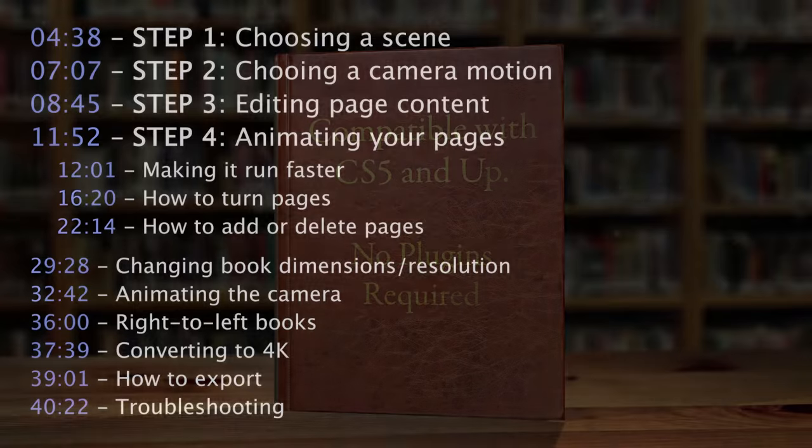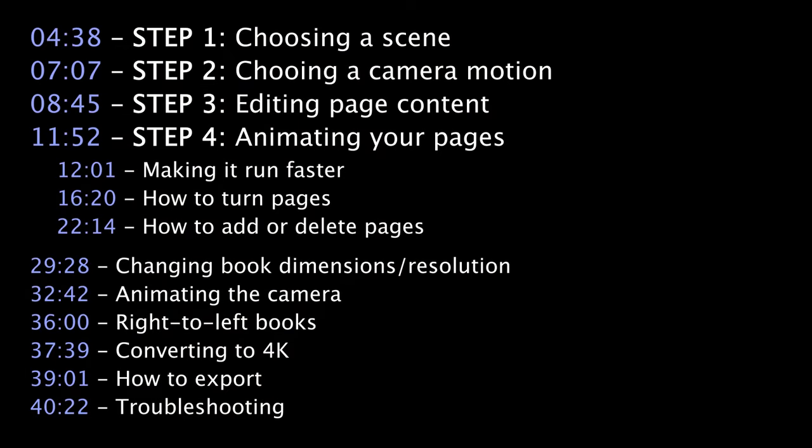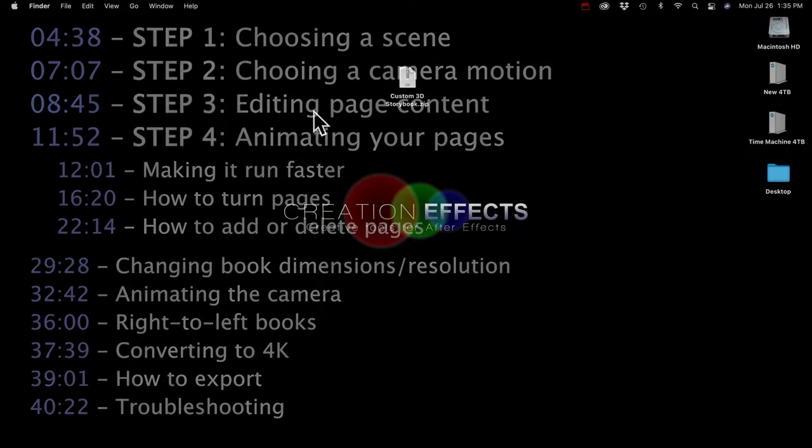Here are the topics I'm going to cover, and I'm going to try and do the video chapters feature as well, so you should be able to hover over the timeline and see the topics there. I'm going to go through the four steps of customizing and animating the book, how to make the template run faster, how to add new pages and turn them, tips for animating the camera, how to make the book open from the back for right-to-left languages, how to convert to 4K, how to export your final animation, and lastly some troubleshooting tips.